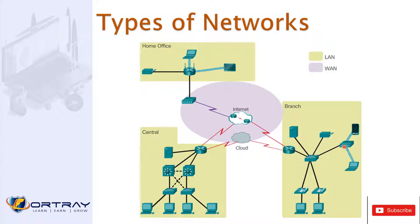The LAN provides local area services. For example, if this person wants to print, they don't need to go to the internet, because this printer is local to them. If any traffic or message goes to the local printer, it is served by the switch — it doesn't cross the network boundary and doesn't go to the WAN side. WAN means wide area network, which connects different LANs to each other.